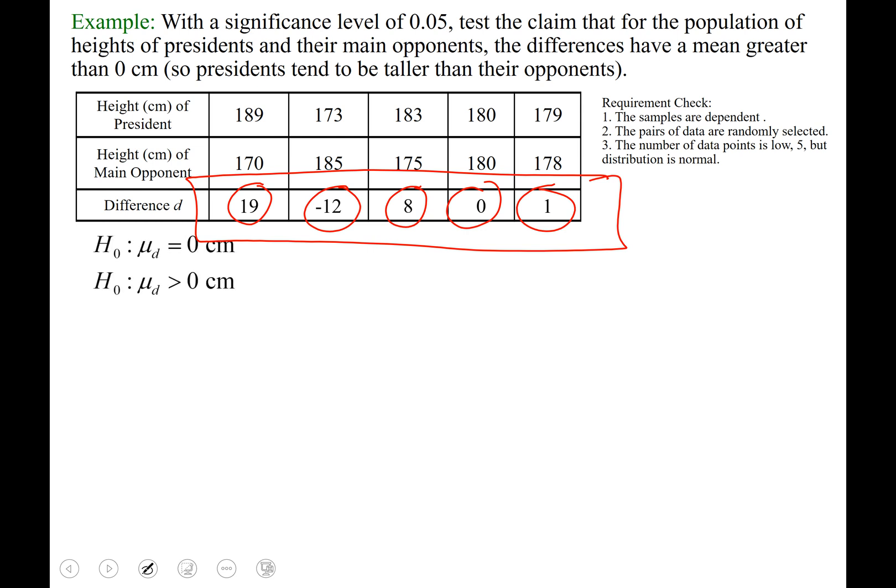Setting up our null and alternative. Oh, that should be a sub 1 right there. Two capital H's, sub 0, sub 1. Mu sub d, because we're talking about the mean of the differences. Mu sub d again. Equal sign, you know, is always true for the null hypothesis.